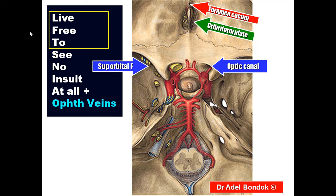The first three structures — lacrimal, frontal, and trochlear nerves — run inside the tendinous ring; the others run outside. Lacrimal, frontal, and nasociliary are branches of the ophthalmic nerve.